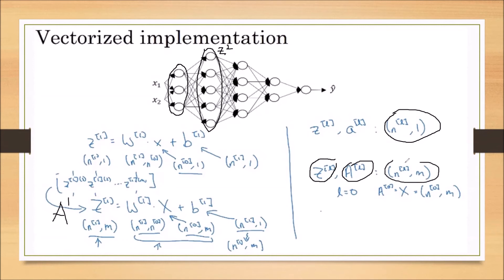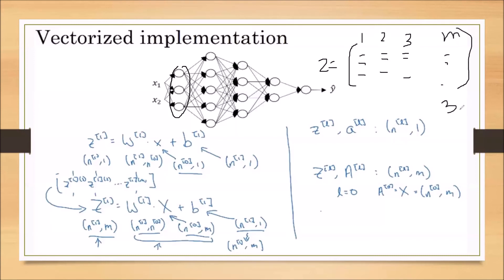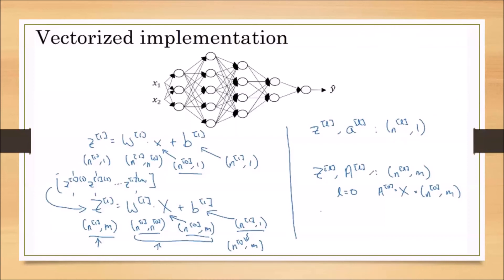When we take m training samples, the Z matrix for the first layer has 3 values for the first training sample, 3 for the second, and so on. So the Z matrix size becomes 3×m — that is, the number of activation units in the Lth layer by m. Both ZL and AL are therefore nL×m matrices.